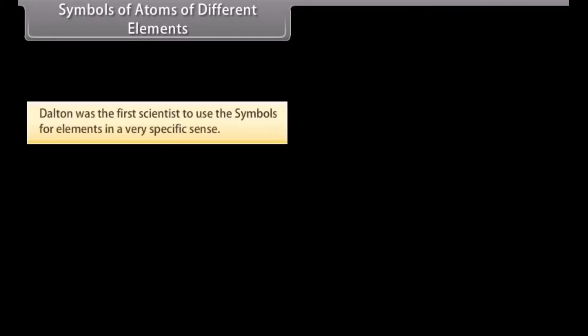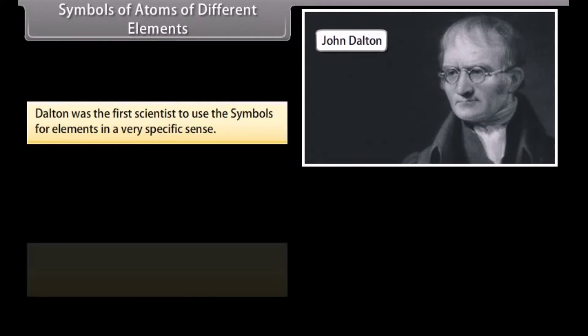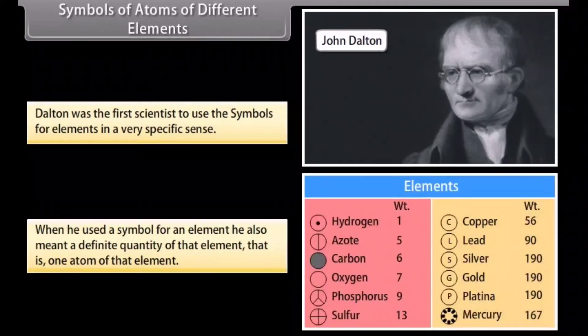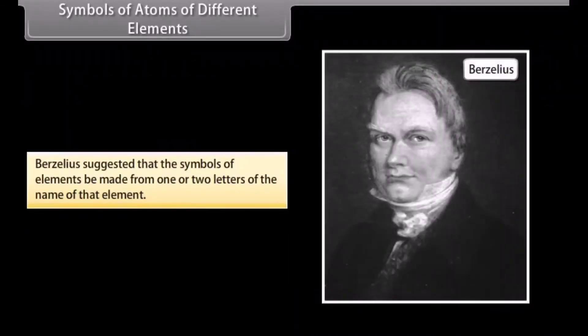Symbols of Atoms of Different Elements. Dalton was the first scientist to use the symbols for elements in a very specific sense. When he used a symbol for an element, he also meant a definite quantity of that element, that is, one atom of that element. Berzelius suggested that the symbols of elements be made from one or two letters of the name of that element.